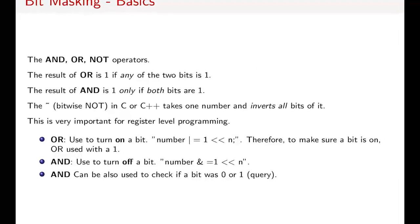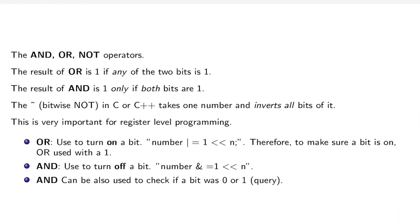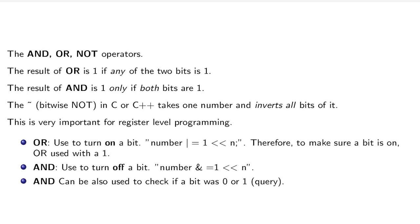Similarly to bit shifting, we have bit masking. We have the operators AND, OR, and NOT. The result of OR is equal to 1 if any of the two bits you're comparing is 1. The result of AND will only be 1 if both the bits you're comparing is 1. The bitwise NOT will just invert all the bits of the number. So if you have 1001, it would become 0110.